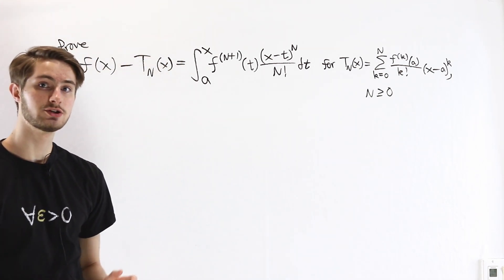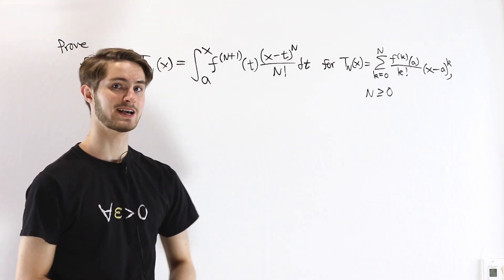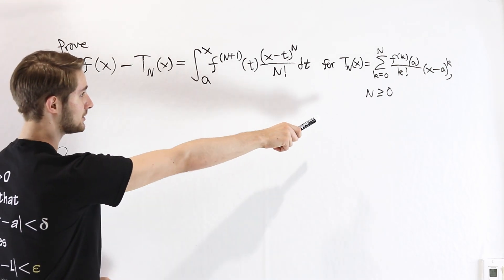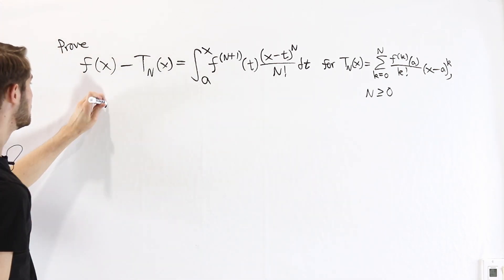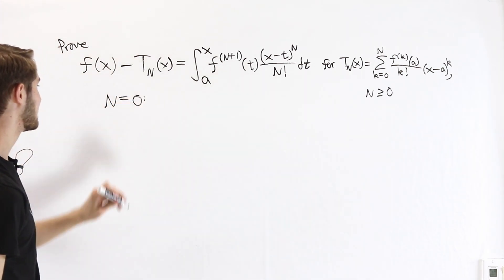Since we're looking at integers, it's a good idea to try proof by induction. In this case, our least integer is n equals zero, so we're going to use that as the base case.